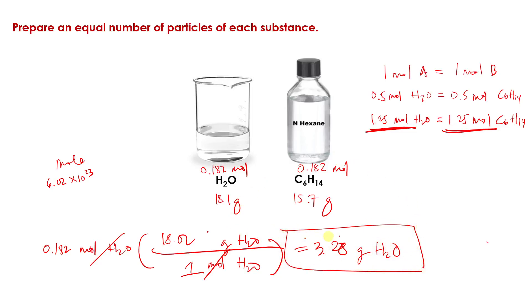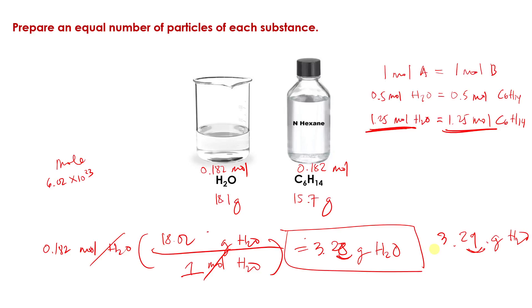This is very close to our earlier result of 3.29 grams of H₂O. For every measurement, this last number can change because it's only an estimate. If we go back to sig figs, the last digit in every measurement is uncertain, so this can vary by one or two points in the last digit. That's how you count the number of particles without really going to the number of particles — you could just stop at the number of moles.